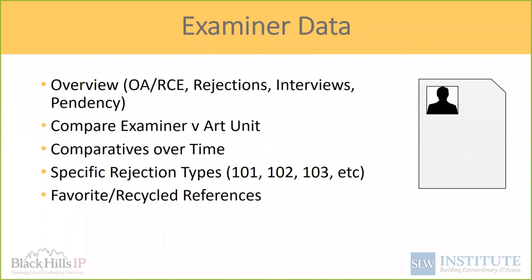There are a few different types of analytics and reports available. The first is individual examiner data reports — reports that talk about the history and trends associated with a single examiner. They might give you an overview of the examiner's history, rejection types they have a propensity for, compare that examiner with their art unit, look at their statistics over time, and whether there are trends around production cycles. Sometimes it's interesting to see their favorite or recycled types of references.